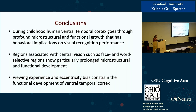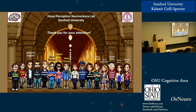In conclusion, these three studies show that during childhood the human ventral temporal cortex undergoes profound microstructural and functional growth with visual and behavioral implications. Regions associated with central vision — face-selective and word-selective regions — show particularly prolonged microstructural and functional development. Viewing experience and eccentricity bias during childhood constrain the functional development of ventral temporal cortex.